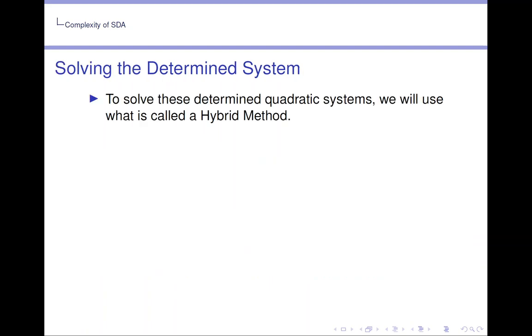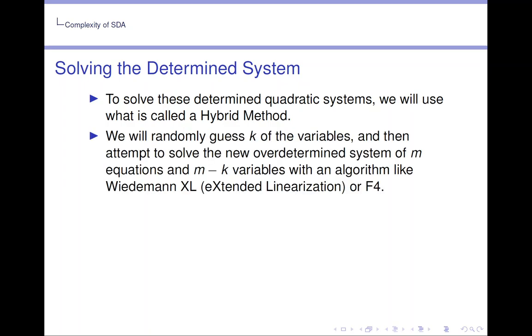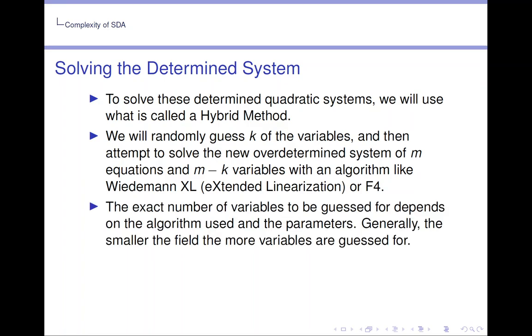To solve these determined quadratic systems we will use what is called a hybrid method. We will randomly guess k of the variables and then attempt to solve the new overdetermined systems of m equations and n minus k variables with an algorithm like XL or F4. The exact number of variables to be guessed for depends on the algorithm used and the parameters. Generally the smaller the field, the more variables are guessed for. If no solution is found, we change our guess and try it again until we succeed.